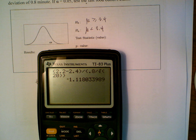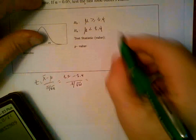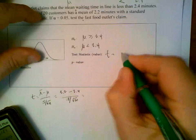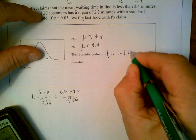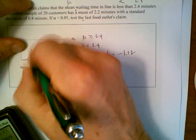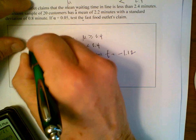And the test statistic is minus 1.12. T equals minus 1.12. Here it is, minus 1.12.